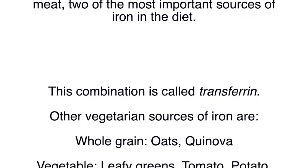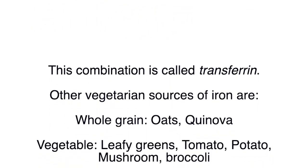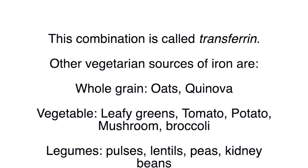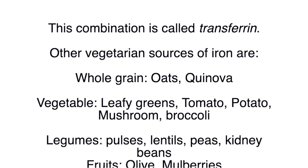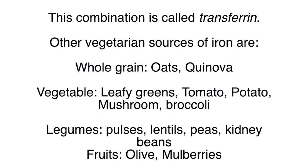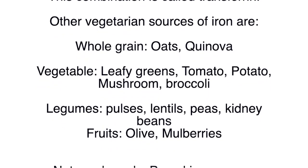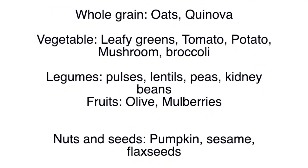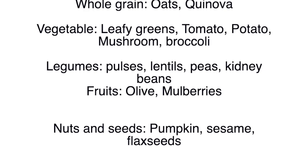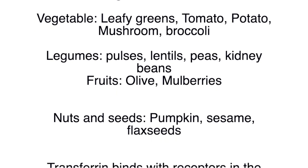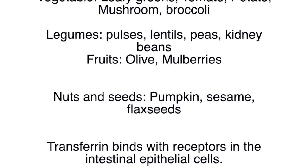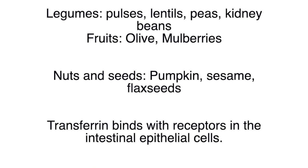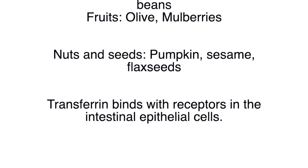Other vegetarian sources of iron include whole grains, oats, and quinoa; vegetables such as leafy greens, tomato, potato, mushroom, and broccoli; legumes including pulses, lentils, peas, and kidney beans; fruits such as olives and mulberries; and nuts and seeds including pumpkin seeds, sesame, and flax seeds.